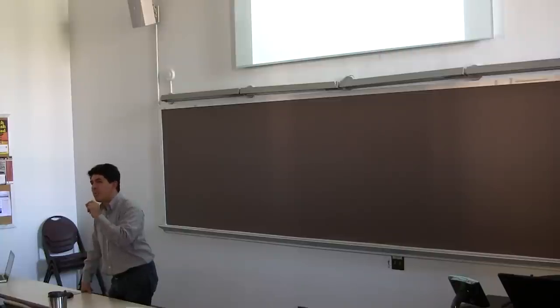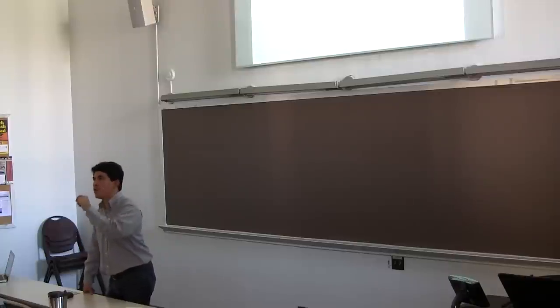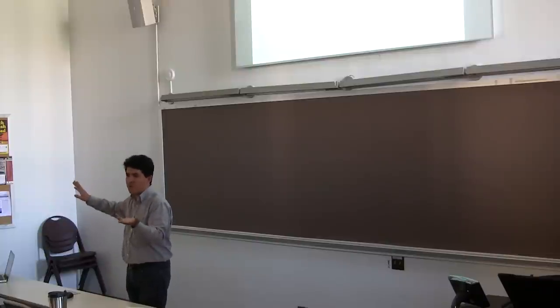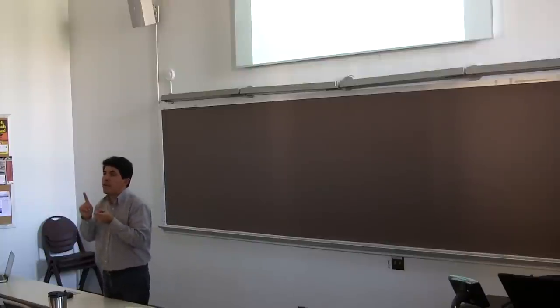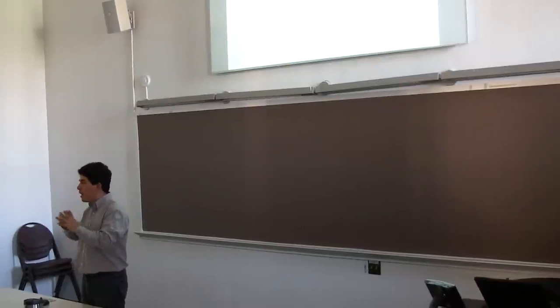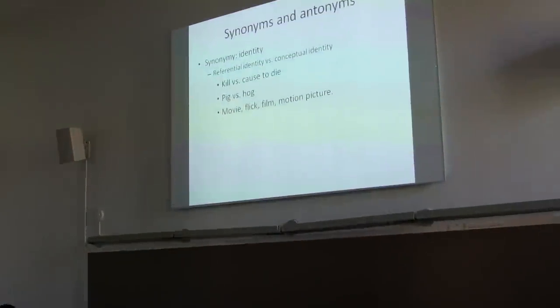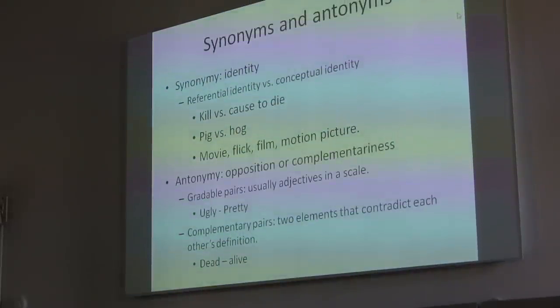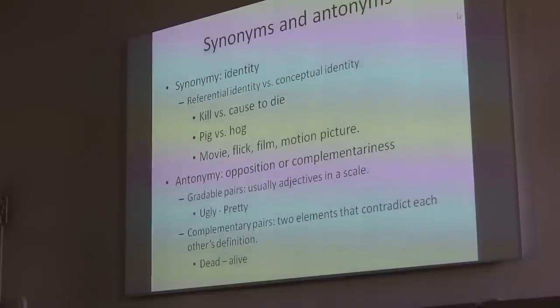If you're very picky, there are no real synonyms. Antonymy, on the other hand, is the relation between words that describes opposition or complementariness. You can have gradable pairs like 'ugly' and 'pretty,' with everything in between — attractive, horrible, nasty. And for those that are not gradable, there is complete opposition: dead or alive. If you are alive, that means you are not dead. And if you are not dead, that immediately means you are alive.